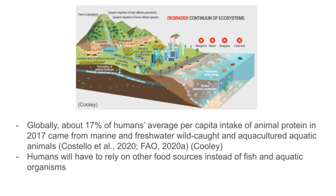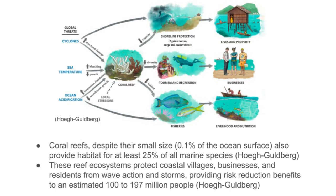I'm now going to talk about the impacts that the degradation of coral reefs in the Caribbean will have on people and wildlife. When coral reefs are absent from the ocean, there's increased wave energy, which allows hurricanes, storms, and severe weather events to damage the properties and kill lives of Caribbean people. The people in the Caribbean rely on fish as their main source of protein — about 17% of them rely on animal protein from marine and freshwater wild-caught aquatic animals. With fish populations declining alongside coral reefs, humans will have to rely on other food sources. When coral reefs break from cyclones, hurricanes, and tsunamis, the protection to people who live on Caribbean islands decreases, making them more vulnerable to flooding and damage from the ocean.